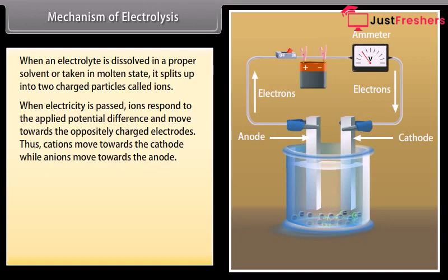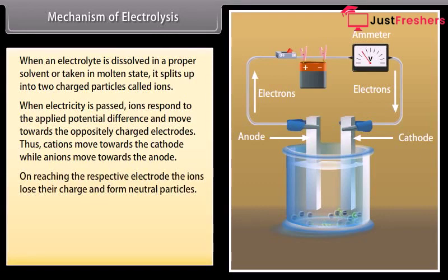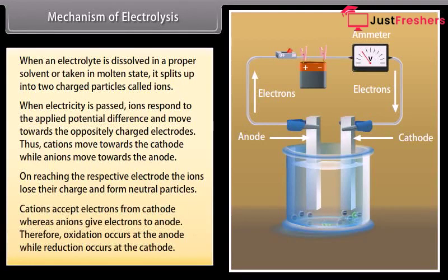Thus, cations move towards the cathode while anions move towards the anode. On reaching the respective electrode, the ions lose their charge and form neutral particles. Cations accept electrons from cathode, whereas anions give electrons to anode.